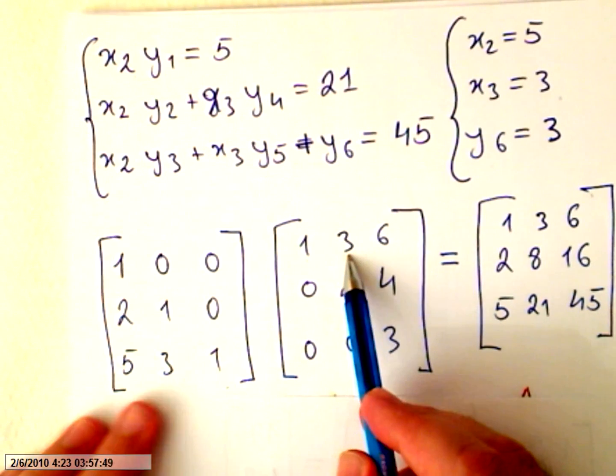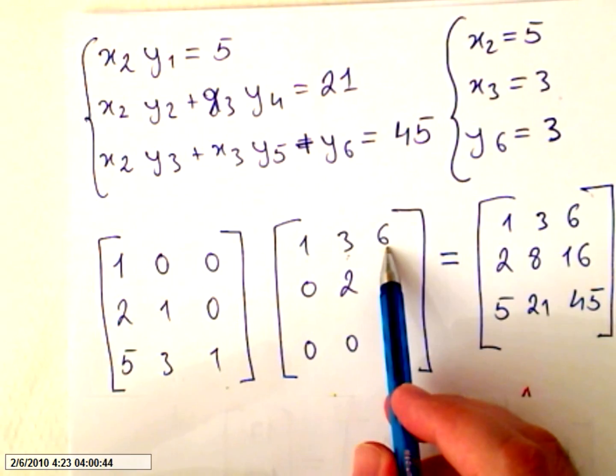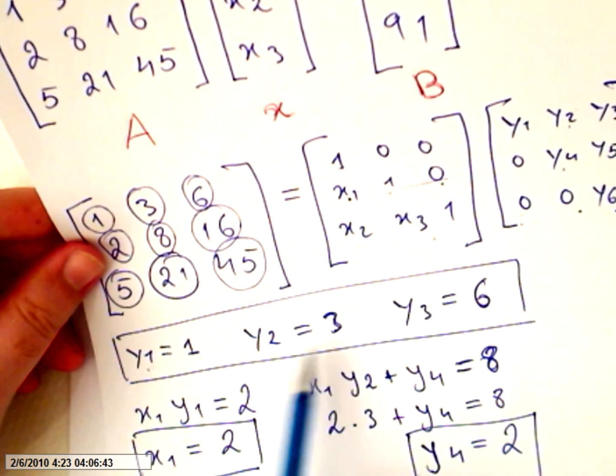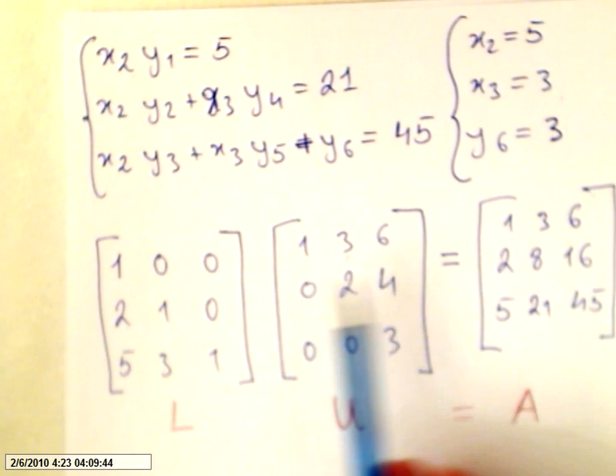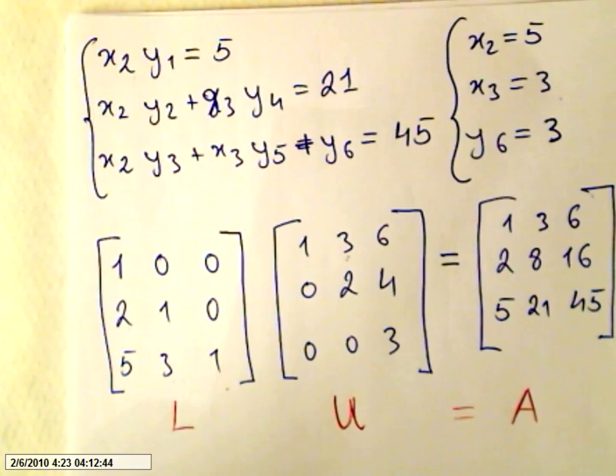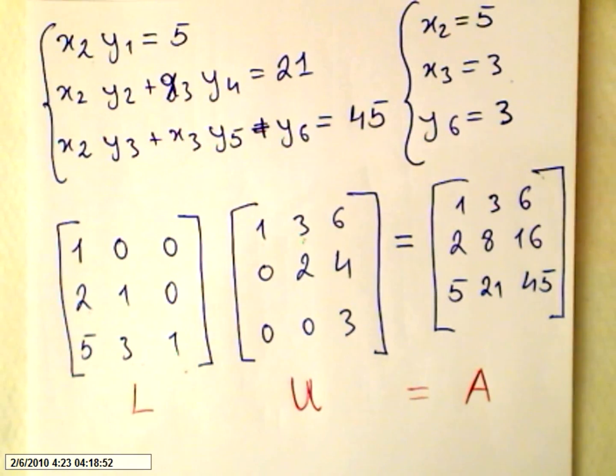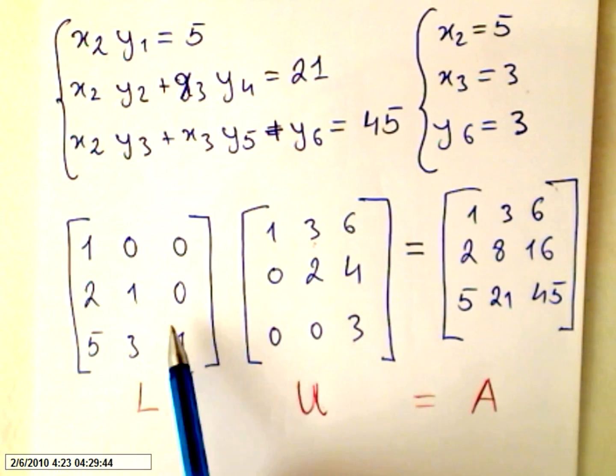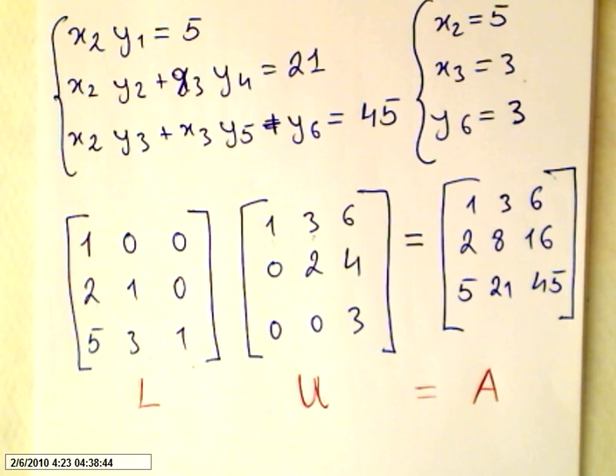Here was y1, y1 is 1. y2 is 3, y3 is 6. So 1, 3, 6. So now, if all we have done so far is right, this will be the lower matrix, this will be the upper matrix, and the product of those two matrices will equal the matrix of the coefficients.